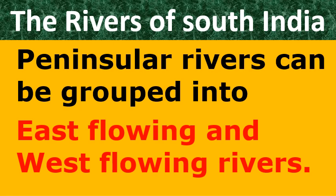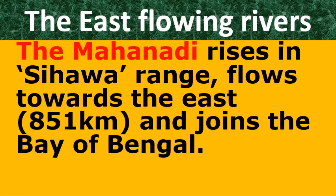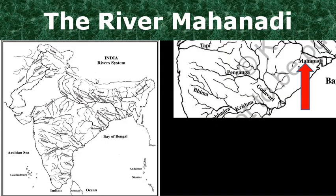These Peninsular rivers can be grouped into east-flowing and west-flowing rivers. East-flowing rivers join the Bay of Bengal, while west-flowing rivers join the Arabian Sea. First of all, we shall know about Mahanadi River. Mahanadi River rises in the Sihawa range and flows towards the east. The total length of its flow is 851 kilometers and it joins the Bay of Bengal. I am showing you River Mahanadi with a red color arrow — Sihawa range is the birthplace.